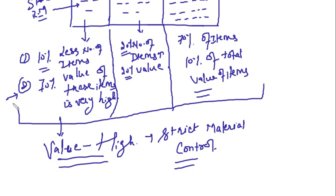Same concept applies to material. The material that is high value — we need to keep more control over it. Moderate-value items get moderate control. And for low-value items, extensive strict control is not needed. Although the volume of those items is very high, their value is minimal, so very strict control is not necessary.